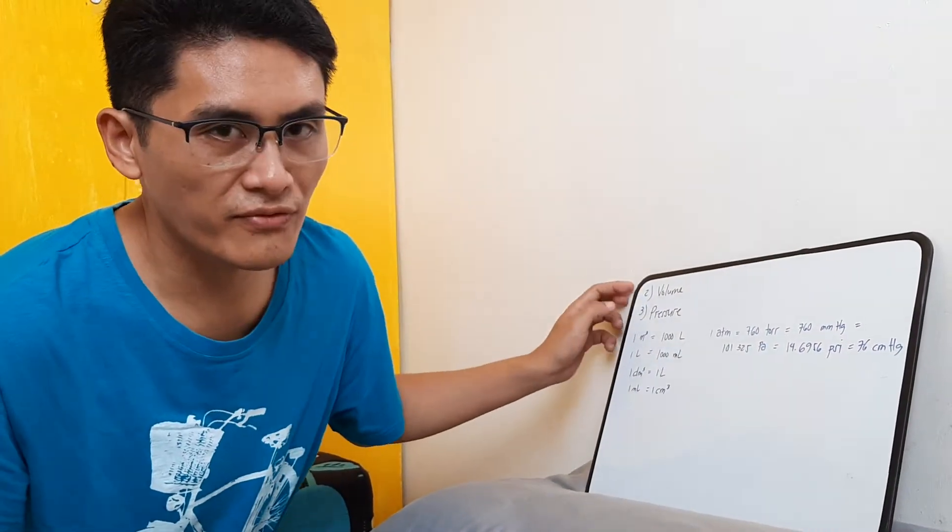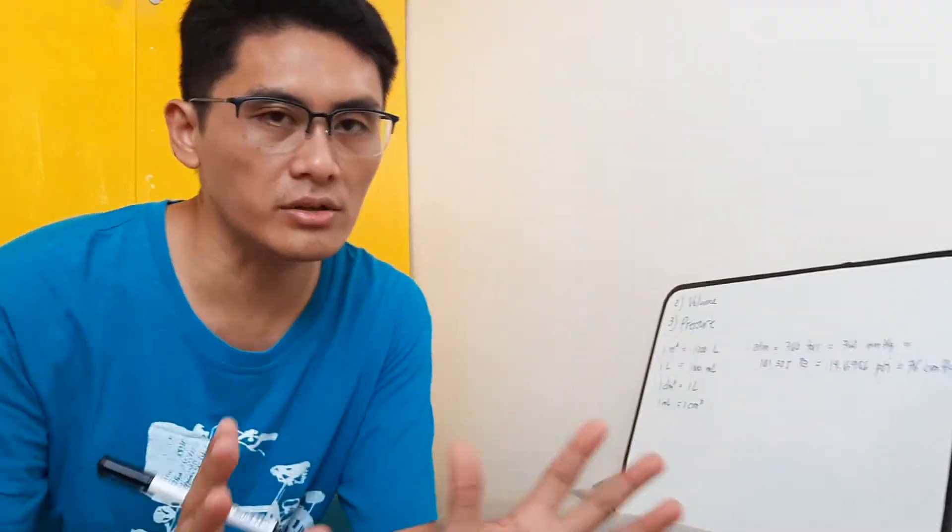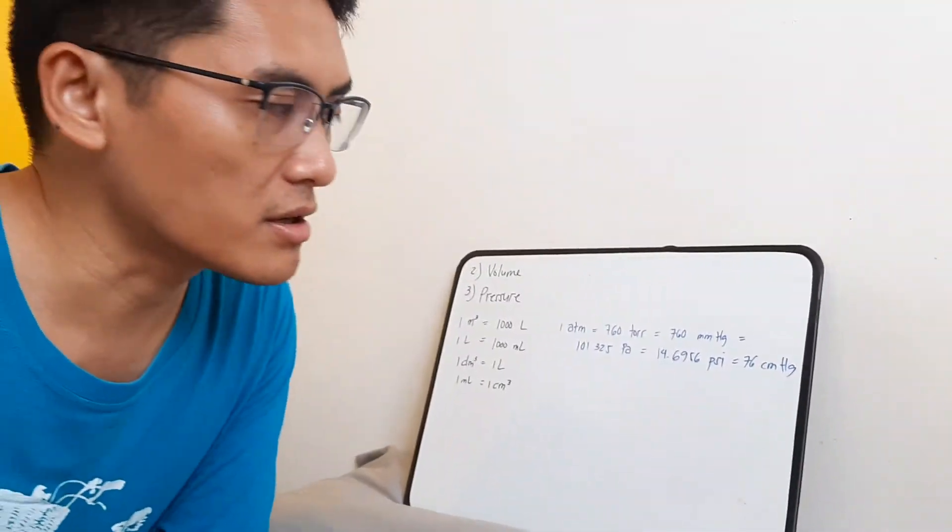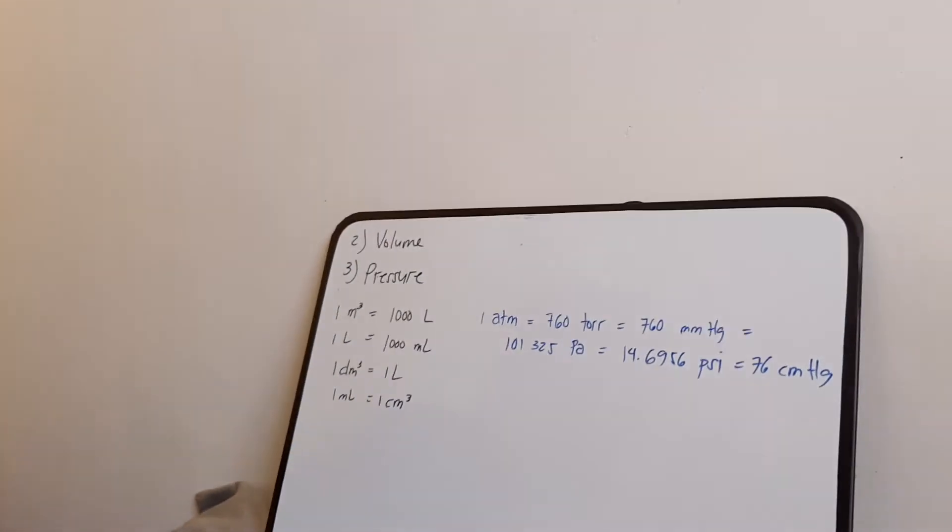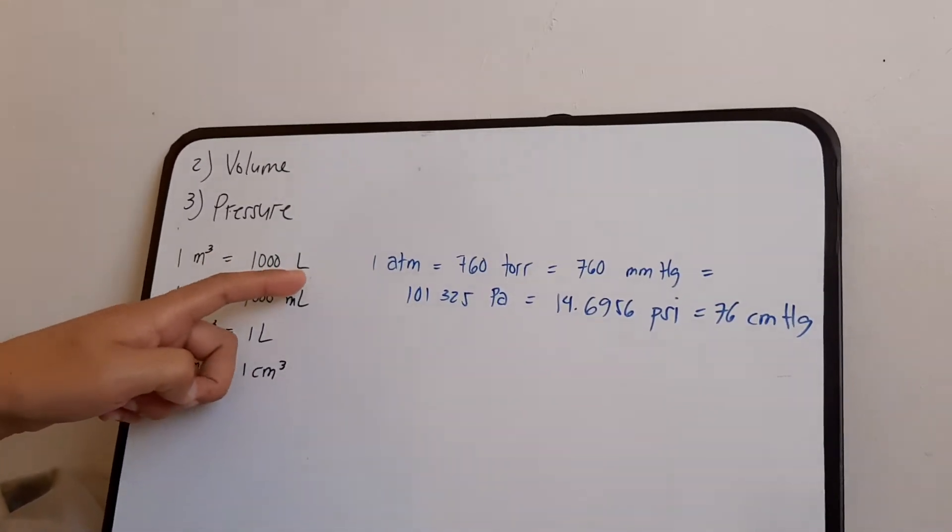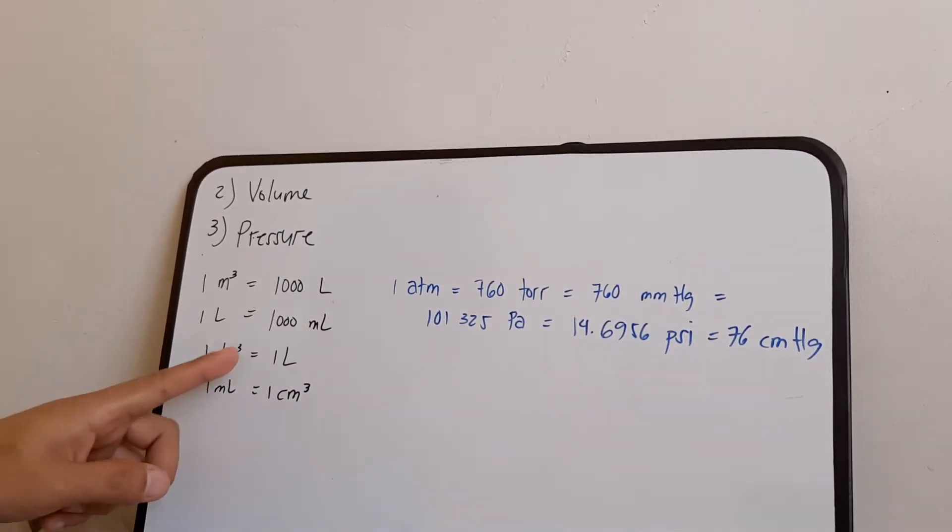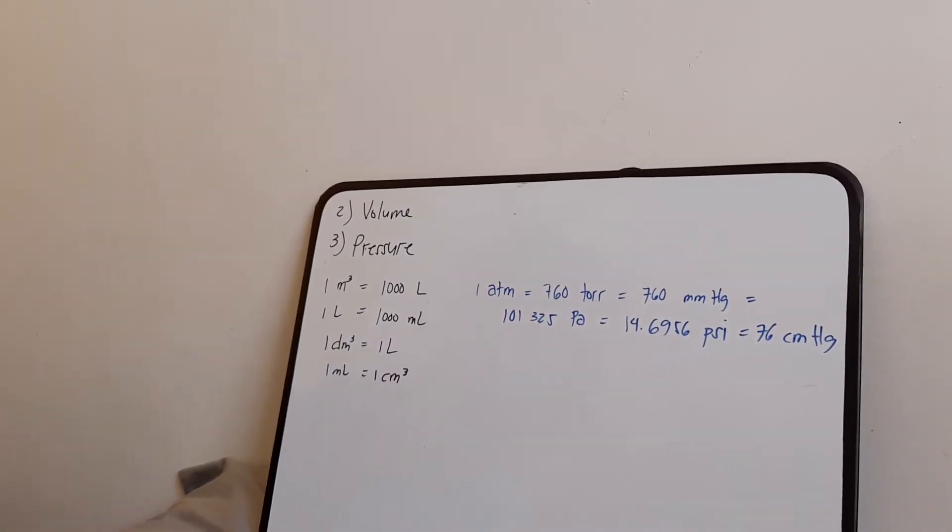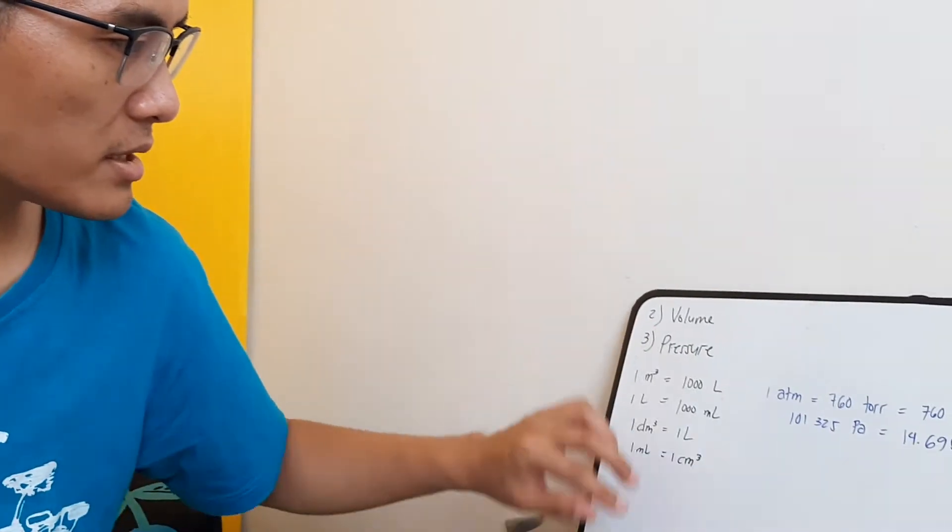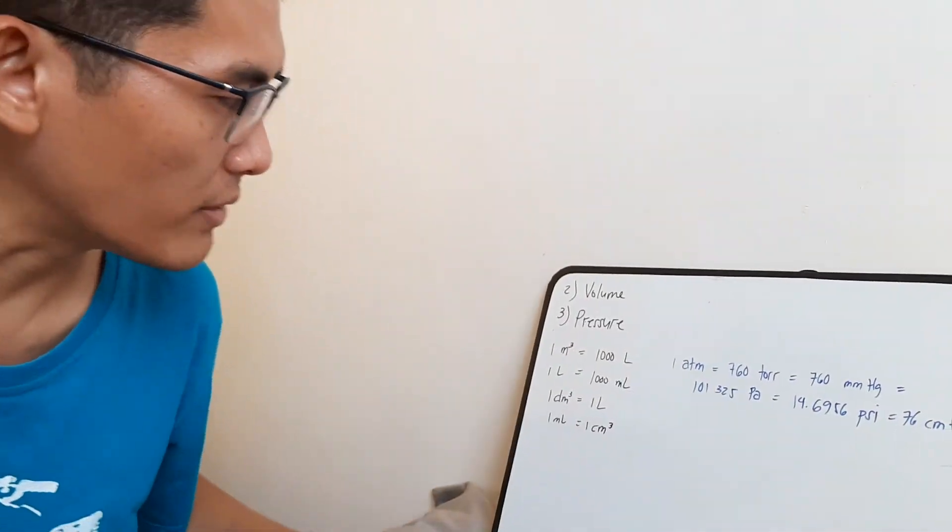The second and third one is about volume and pressure. So let's take a look at what units are used in those two quantities. In volume, we have units such as meter cubed, liter, ml, dm cubed, and cm cubed. Obviously there are also a bunch of others, but basically those are the most common things that you can find.